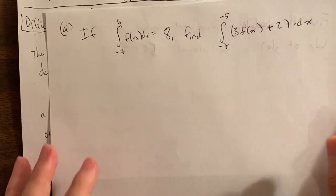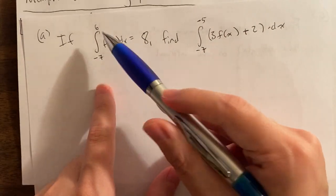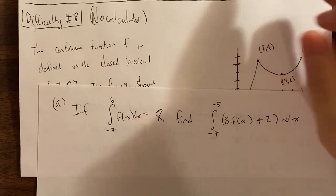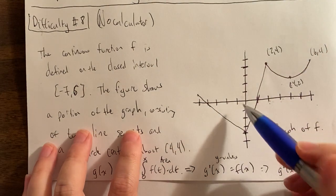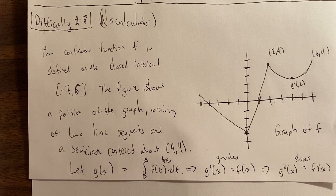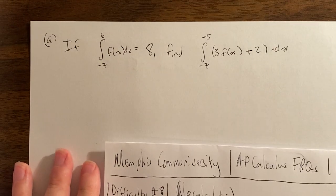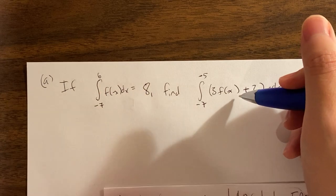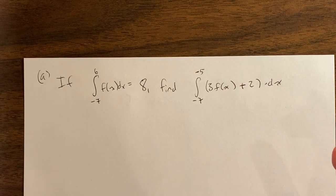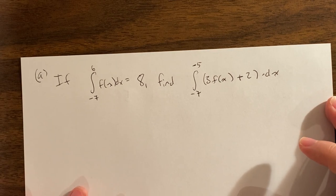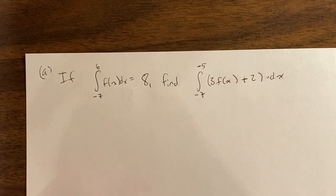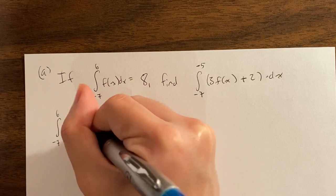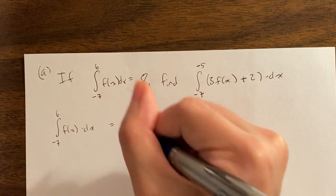So we're ready to do the free response question. We'll need to be careful with negatives when dealing with areas. Here's the first question: if the integral from negative 7 to negative 6 of f of x equals 8, then we want to find a certain integral. The problem is this graph only goes from negative 5 to 6, so we don't know the integral of f from negative 7 to negative 5. We need to find that using what I call the small, middle, middle, big rule — an integral property.